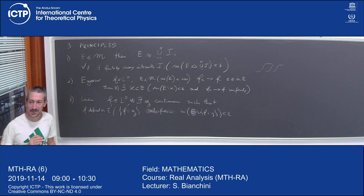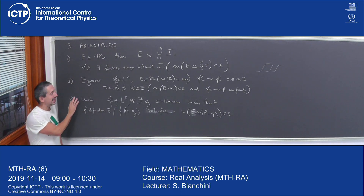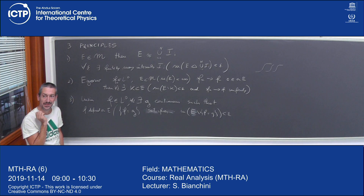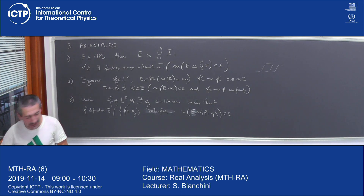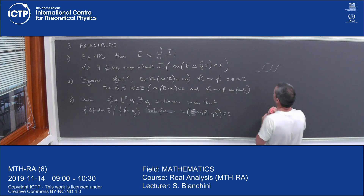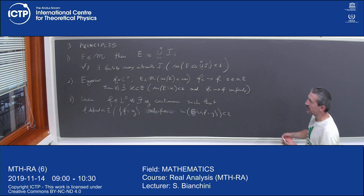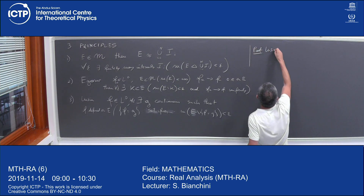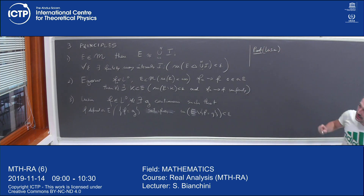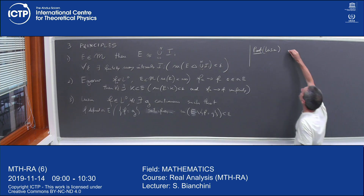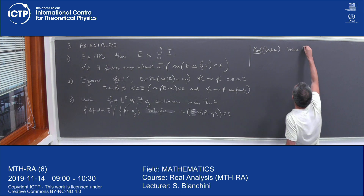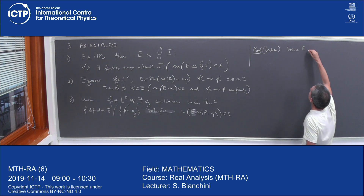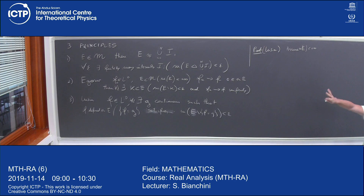So F_m is a continuous function which converges uniformly on a compact set K. Continuous functions form a Banach space, so it's complete. F restricted to K is the uniform limit of F_m restricted to K, and the space of continuous functions on a compact set is complete — so F is continuous on K. The finite measure assumption is needed to apply Egorov, and then we remove it.